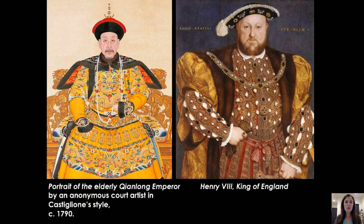The portrait of the elderly Qianlong Emperor — by an artist in Castiglione's style, not Castiglione himself — shows similarities between East and West. Comparing it to Holbein's portrait of Henry VIII from the 16th century, both figures fill the composition, look powerful, and have a lot of decoration indicating royalty. However, there is a definite reduction in modeling on the Qianlong Emperor, and that brightness and purity reinforced in his portrait.